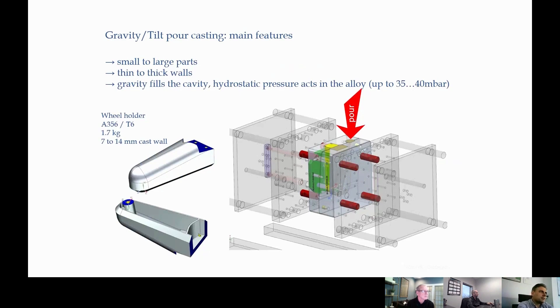We can make a variety of casting walls also, and when we fill the cavity of the mold, actually gravity does this. The pressure inside the cavity is only the hydrostatic pressure, which is between 35 to 40 millibar. On the left side you can see a casting made with this process, with the parameters given on the left, almost 2 kg in weight, 7 to 14 mm casting walls.